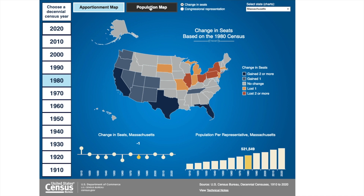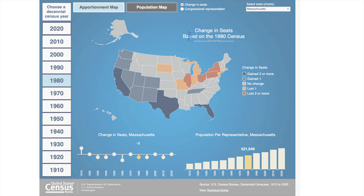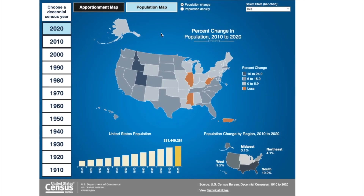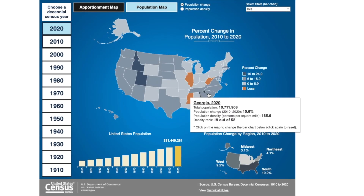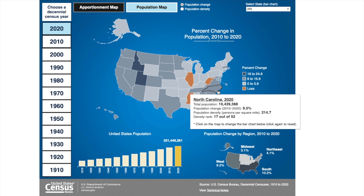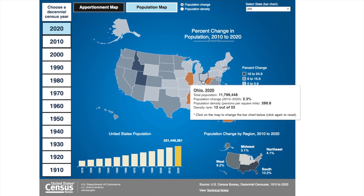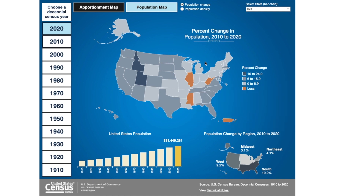Now let's take a look at the population map. Once you click on population map, we are back to showing the default view of the United States. You can use this view to compare states and see how the population has changed in different areas of the country, including the population change by region between 2010 and 2020.